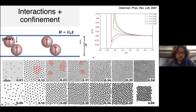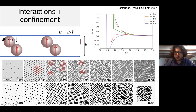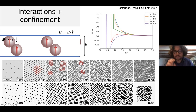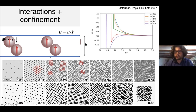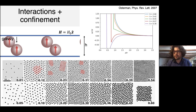Some groups studied this in equilibrium — just applying a field and observing. Depending on the density, you can have repulsive states, square configurations with some particles up and some down, then particles coalescing into clusters which grow into worm-like structures, and eventually labyrinth-like structures, until you have a dense system of up and down particles. This is all in equilibrium.